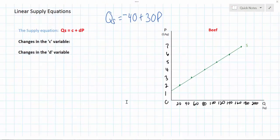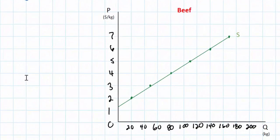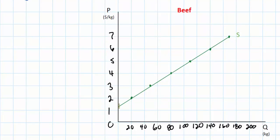In our last video we talked about how the c variable represents the q-intercept of supply. This is where the supply curve would cross the quantity axis if it went all the way to the quantity axis on our graph. However, what you can see here is that the supply curve does not actually intersect the q-axis in the visible range of our graph.